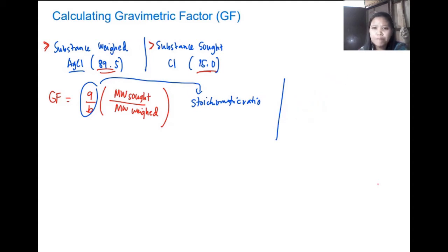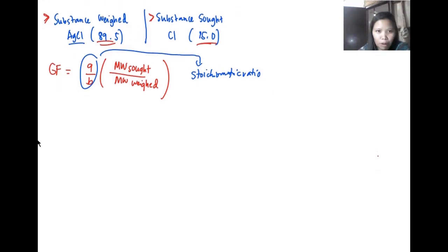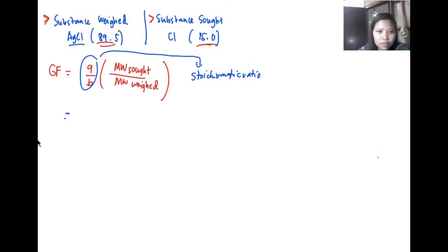Now let's go back to our problem. We have Cl over AgCl. Our substance sought, we have one Cl, right? And if we look at the bottom we also have one Cl. So there's no need to find numbers so that the top and bottom will be equal because they are equal. Our stoichiometric ratio in this sense is just one over one.